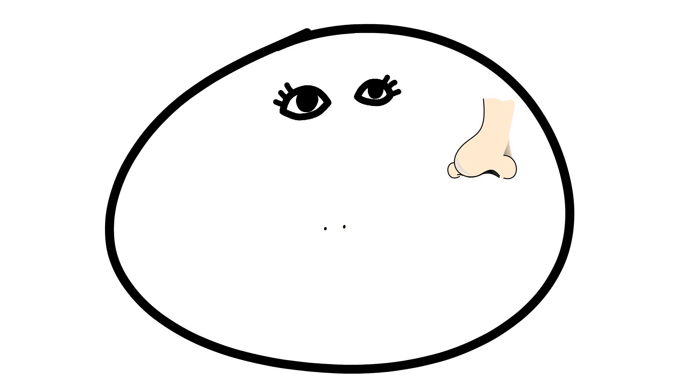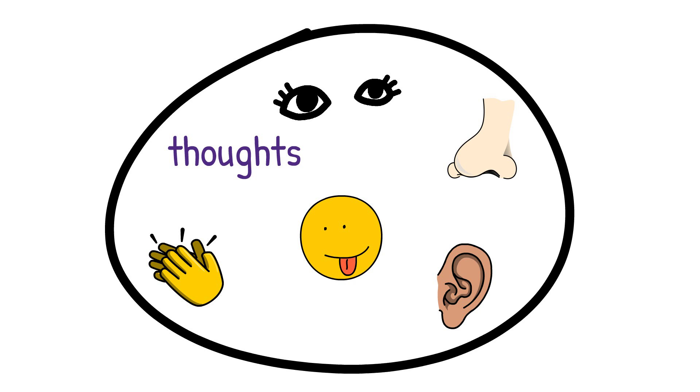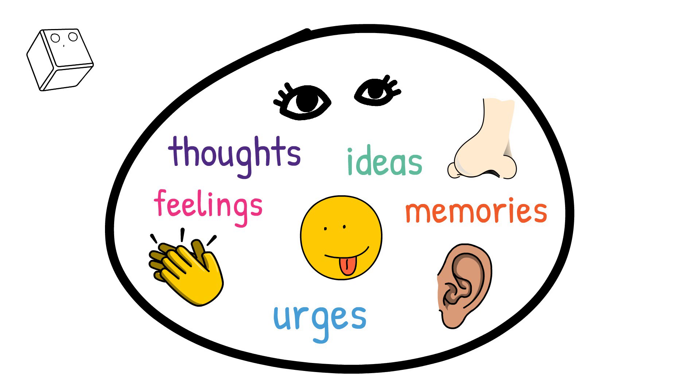Now our minds also have a bunch of other stuff swirling around. We have thoughts coming and going through our mind all day every day. We also have memories in there. We have feelings, ideas, urges. All of these things are rolling about in our mind all day every day.